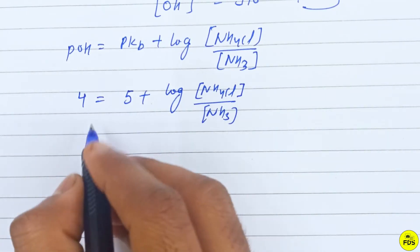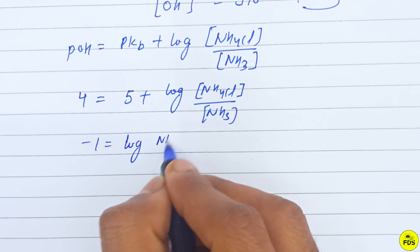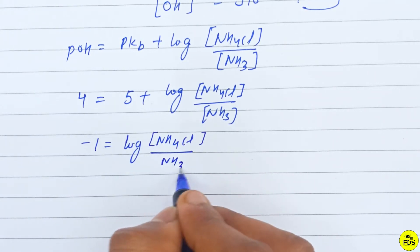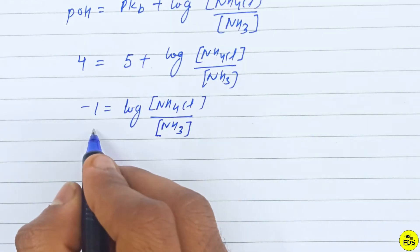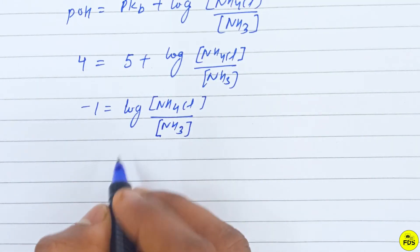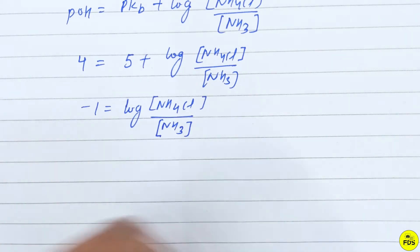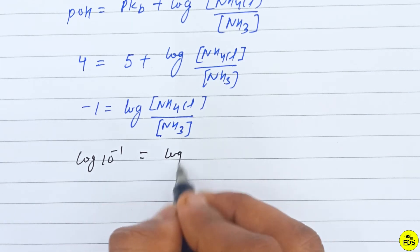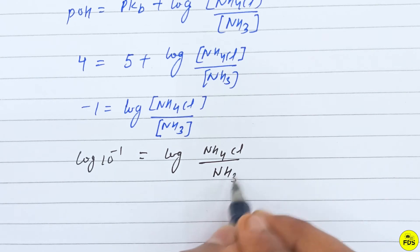Taking log on both sides: log 10 to power minus 1 is equal to log of NH4Cl upon NH3 concentration.